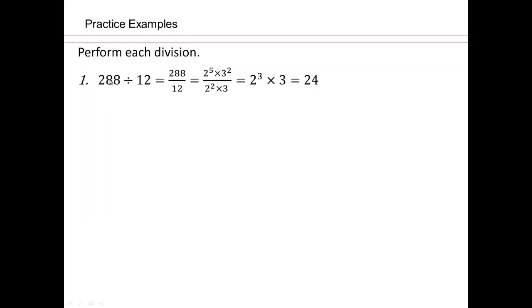All right, so let's go 288 divide by 12, which is the same as 288 over 12. You already know how to simplify that. Factor everything. Make your factoring tree and factor everything. And then what? Divide like terms, right? So 2 to the fifth and 2 to the second will leave you with 2 to the third. 3 to the second over 3 will leave you with a 3. How about that?